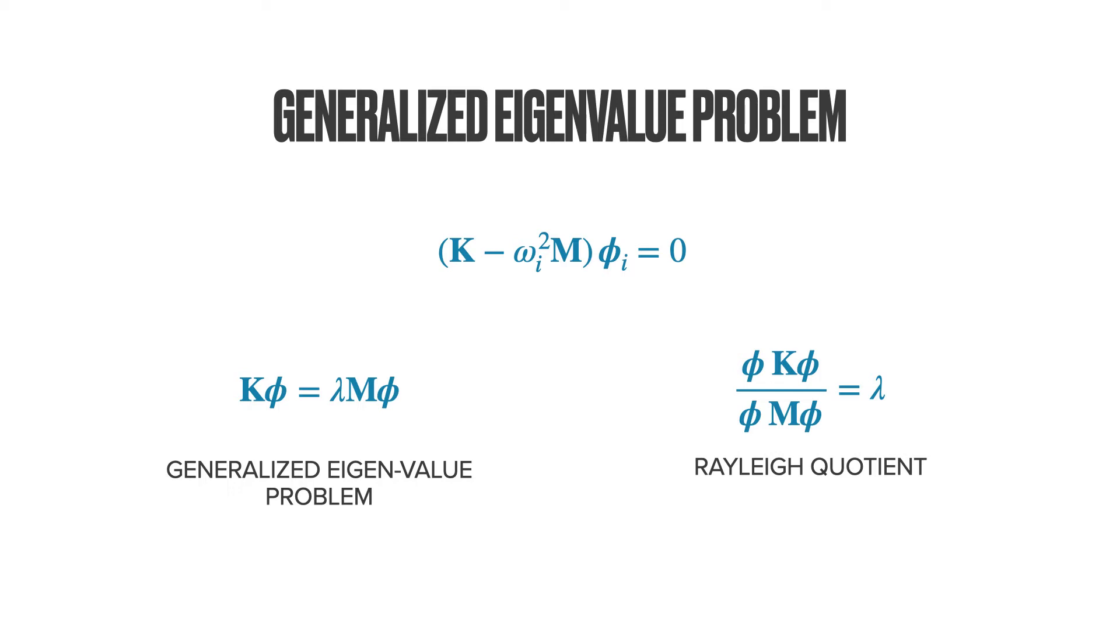Now, if we assume we have the solution for the eigenvector phi, then we can compute the eigenvalue using the Rayleigh quotient, shown on the right. The Rayleigh quotient is obtained by pre-multiplying the left-hand side and the right-hand side of the generalized eigenvalue problem with phi and solving for lambda.